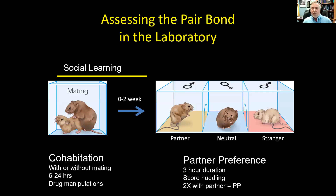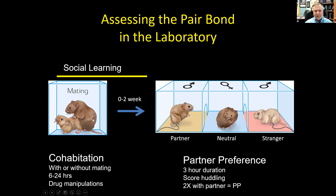So what about the pair bond? Early work done by Sue Carter showed that when prairie voles mate, it's that mating that transforms the brain so that they bond with who they mated with. They can also just be together and interact socially for a longer period, but mating facilitates it. She devised this test called the partner preference test, where you give the animals a choice between their partner and a novel animal.